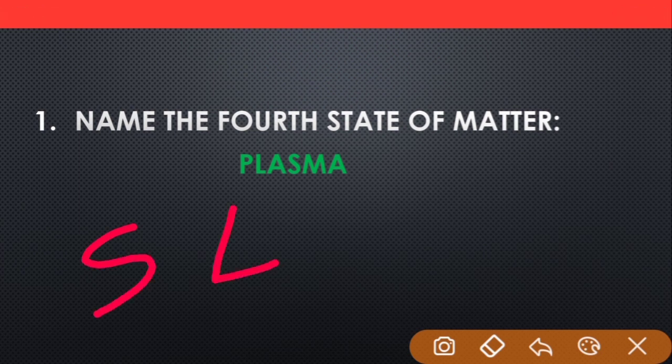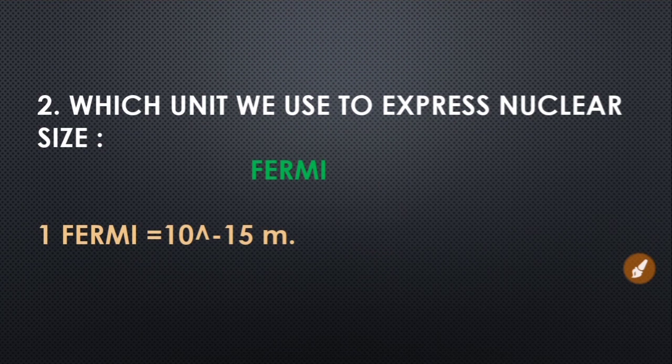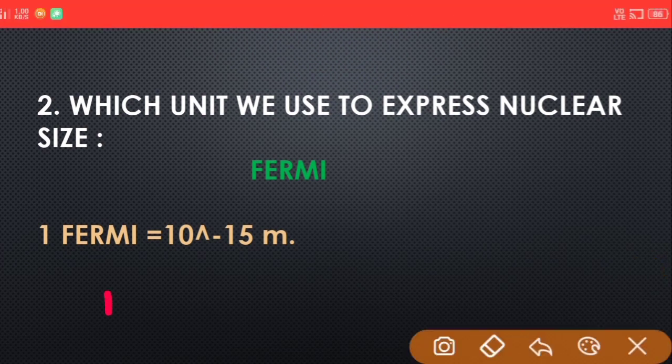Next question: which unit we use to express nuclear size? Answer: Fermi. And one Fermi is equal to 10 to the power minus 15 meters.